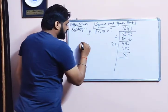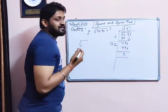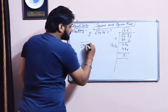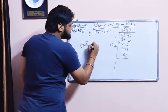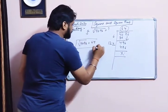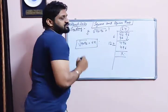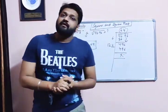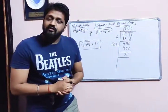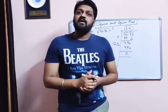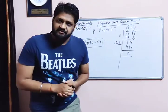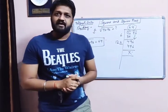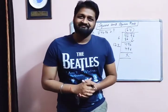When the remainder is 0, the answer is the square root of that particular number. So the square root of 4096 is 64. After the prime factorization method, this is the division method to find the square root of any number. Do practice the questions in exercises 6.1 and 6.2. We will discuss the queries in the next video. Thank you.